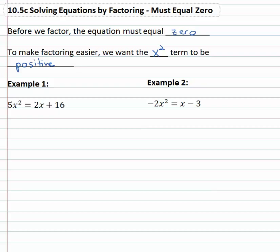So if we see 5x² = 2x + 16, we want it to equal zero. So we can either move the 5x² over to the right, but to do that we'd have to subtract. That would give us negative 5x², we don't like that.